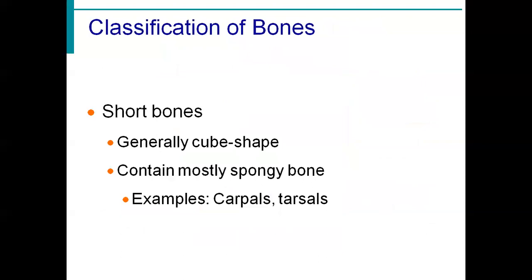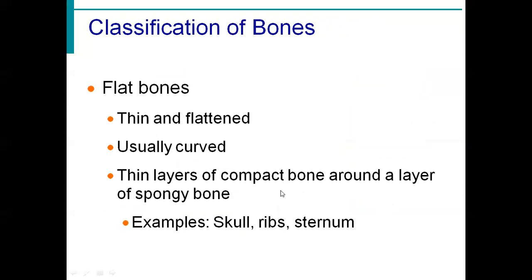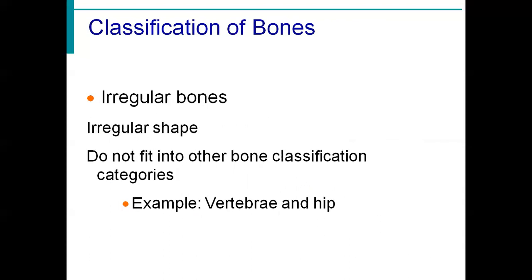The fourth type is irregular bone. Note the difference: short bones are mainly spongy bone type, whereas flat bones consist of both compact and spongy bone. The name 'irregular bone' implies an irregular shape — these bones do not fit into other bone classification categories.